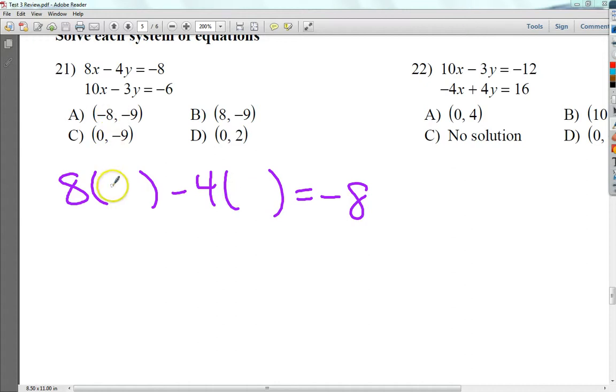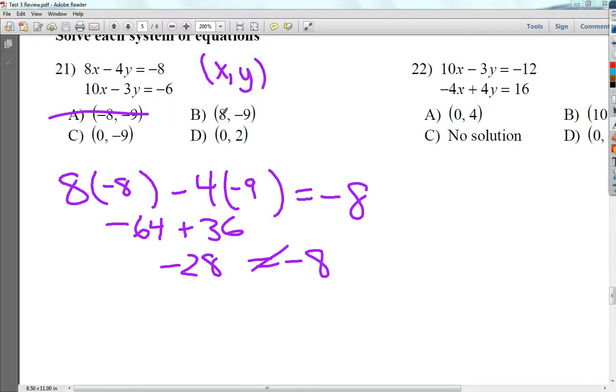So I'm going to try the first one, negative 8, and then negative 9. So when I plug in negative 8 times 8, I get negative 64, and then negative 4 times negative 9 would be plus 36. I'd end up with negative 28 here. That is not equal to negative 8. So I know that A is not the correct answer. And by the way, these are in x y format, of course. It's kind of a pre-algebra skill that I assumed, and then I realized I didn't say it.